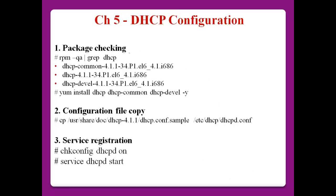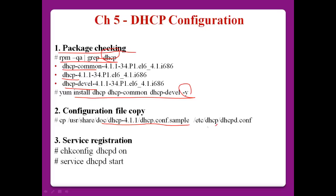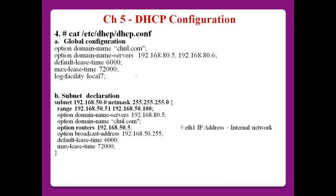Chapter 5: DHCP Configuration. First, package checking. Please check that you have the DHCP packages: dhcp, dhcp-common, and dhcp-devel. If you don't have these packages, install them like this: yum install dhcp. After that, number two, configuration file copy. Even if you install the DHCP package, the DHCP server does not provide the main configuration file, so you need to copy the main configuration file from the sample location.